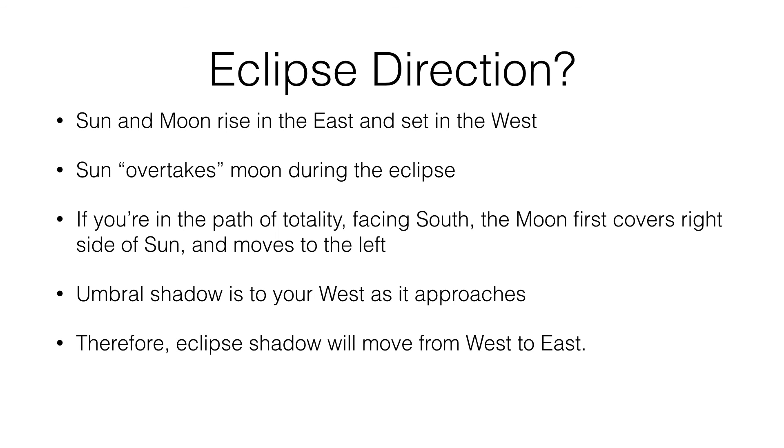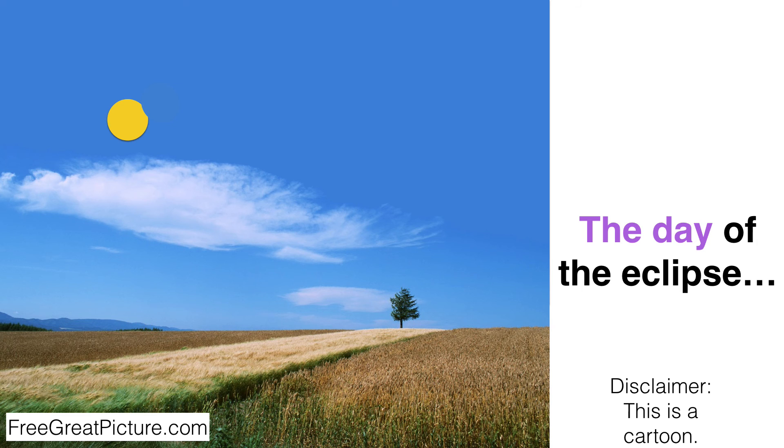Now the interesting thing about this is that this is absolutely true in both the flat earth and the globe earth models. The only thing that matters is what we'll see when we look up in the sky. So again, just to revisit the animation, both the sun and the moon are moving east to west, but the umbral shadow is going to move west to east.